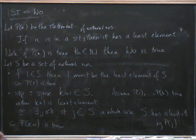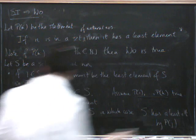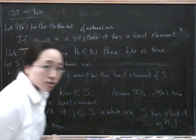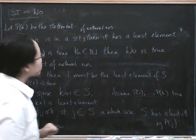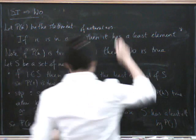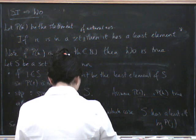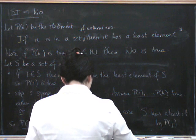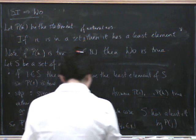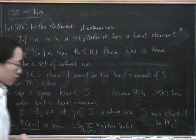And that's what we wanted to show — we've done the step. We've assumed that P(1) up to P(k) is true, and we've deduced that P(k+1) is true. Therefore, by the principle of strong induction, P(n) is true for all n in the natural numbers. Therefore, the well-ordering principle is true.